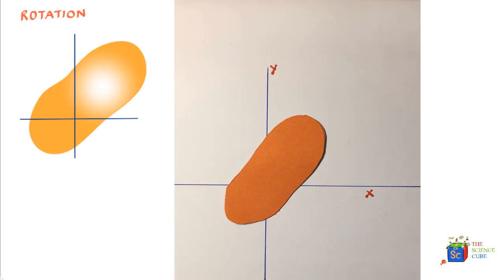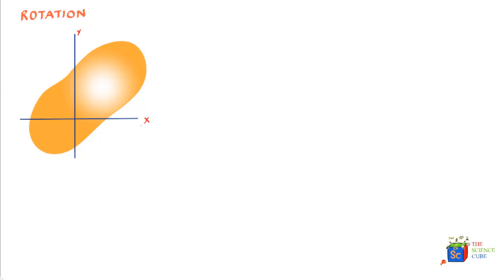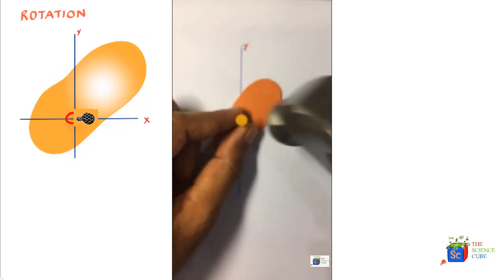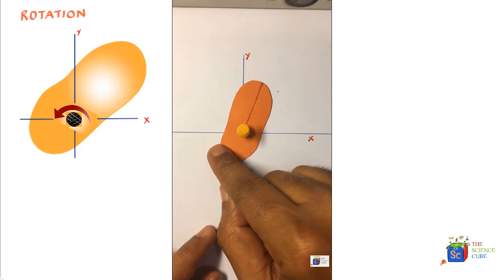Consider a piece of plastic — a rigid body — lying on an xy plane. This is your y-axis and this is your x-axis. Imagine it is being rotated around the origin, and the axis of rotation is the z-axis. You could imagine there is a nail driven through the origin and this piece of plastic is being rotated with the nail as the axis.